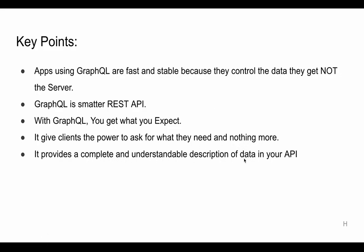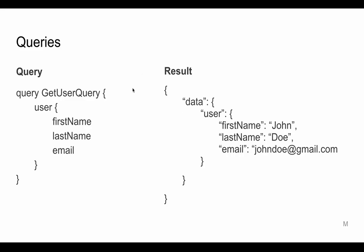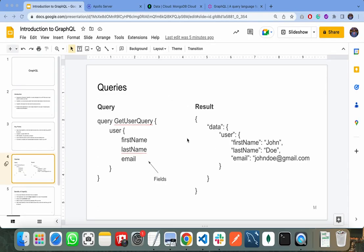This is how a GraphQL query looks. We name our query — here I'm naming it 'get user query'. This is the query name 'user' and I'm asking GraphQL to return only the first name, last name, and email. The backend may have more fields, but I only need these fields, and as you can see in the result it only provides those specific fields.